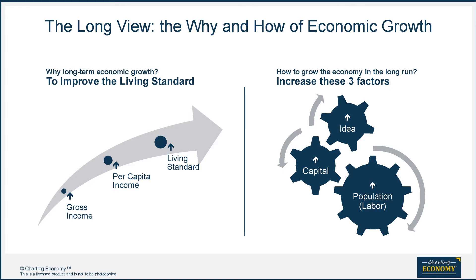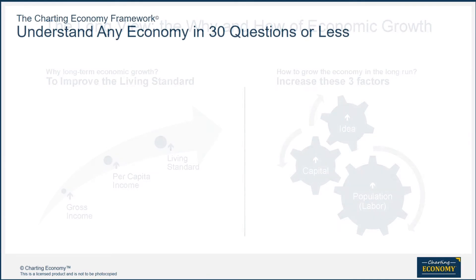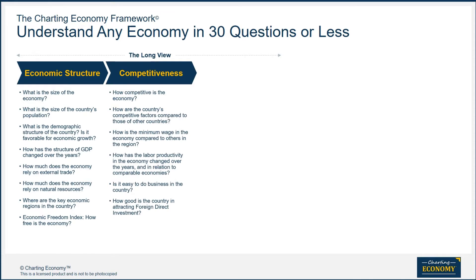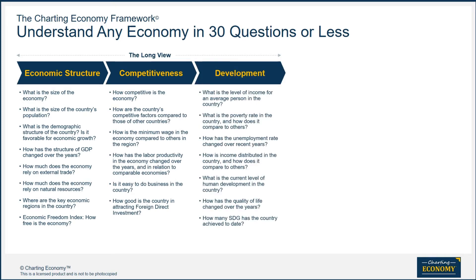What about spectators like us? We can ask questions that give us clues to assess those three factors and the results on people's well-being. In the long view, our framework divides the questions into three groups: economic structure, competitiveness, and development. Development is the eventual result of long-term growth, which is in turn driven by economic structure and competitiveness.